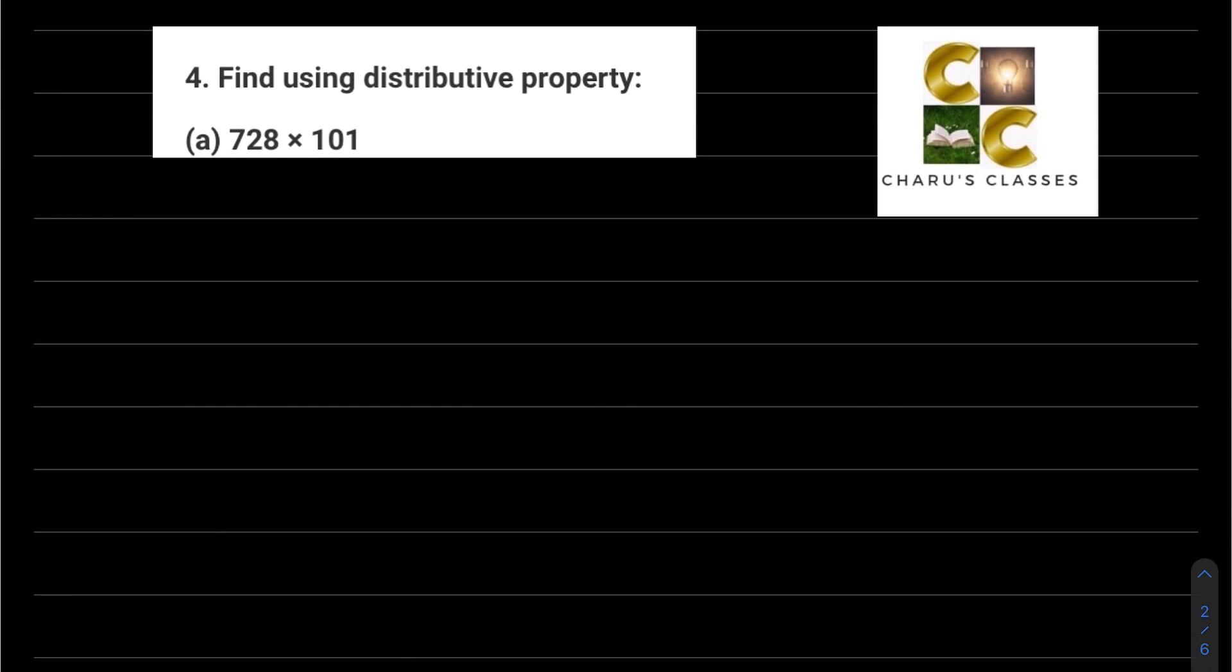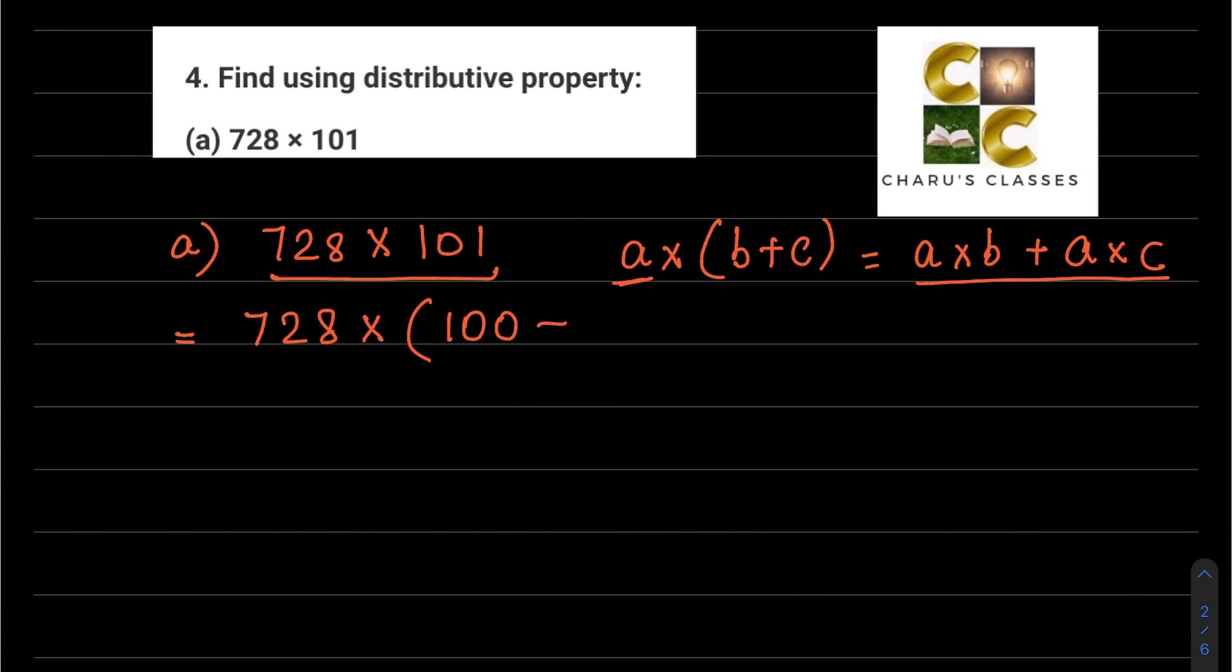Question number 4: Find using distributive property. Part a: 728 into 101. First let's understand the distributive property. Distributive property is a into bracket b plus c, which we can write as a into b plus a into c. Or if we have a into b plus a into c, we can take a common and write it as a into bracket b plus c. To solve this question using distributive property, we can write 728 into 101 as 728 into 100 plus 1.